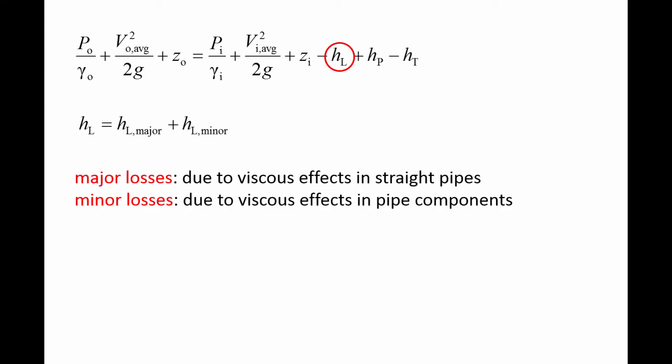In a previous video, we examined the major losses in a pipe system, which are denoted by h_L,major and are caused by viscous effects in straight pipes.